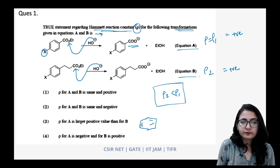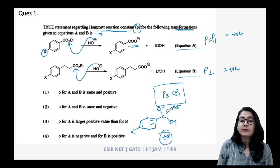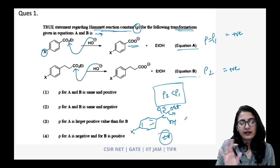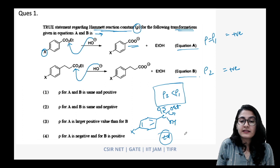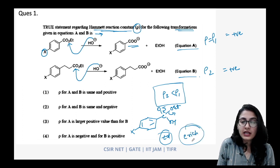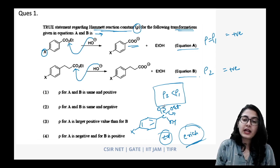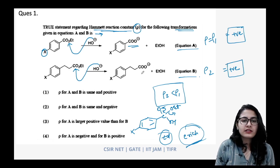The tetrahedral intermediate formed during ester hydrolysis — when the bond falls back and the ethoxy group leaves — is absolutely electron-rich. Because the transition state is electron-rich, the rho value is positive for both reactions. The question is: why is the rho value for equation A a higher positive than for equation B?